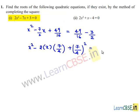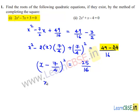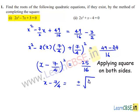So the LCM is 16, giving 49 minus 8 times 3, which is 24. This is of the form a² minus 2ab plus b², which can be written as (a minus b)². So (x minus 7/4)² is equal to 49 minus 24 is 25, over 16, giving (x minus 7/4)² equal to 25/16.